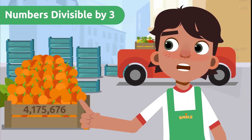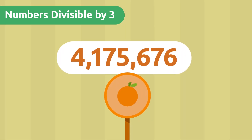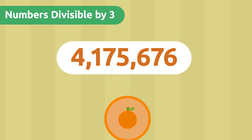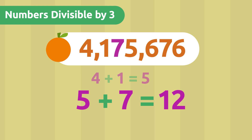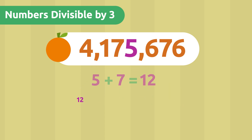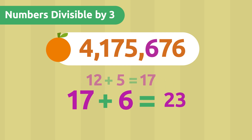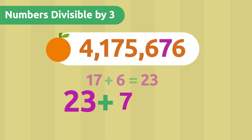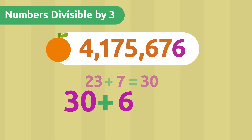Let's see what happens with all the oranges we have. There are 4,175,676 oranges to sort. That's a huge number, but that's okay. We'll do it one step at a time. 4 plus 1 is 5, 5 plus 7 is 12, 12 plus 5 is 17, 17 plus 6 is 23, 23 plus 7 is 30, and 30 plus 6 is 36.